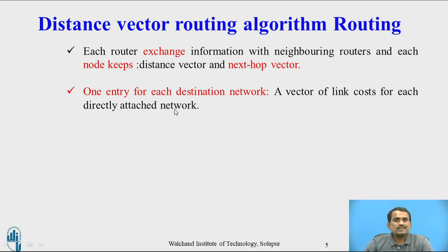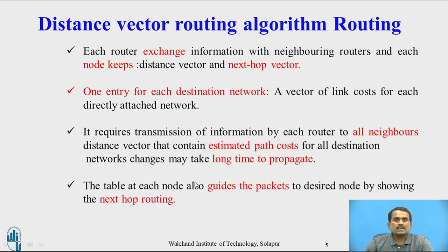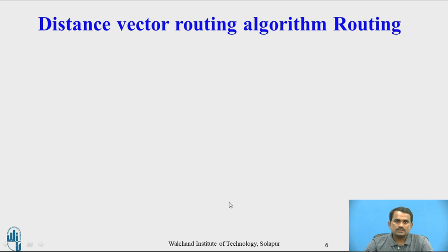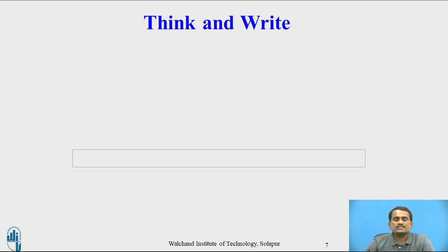There is one entry for each destination network, and a vector of link costs for each directly attached network. It requires transmission of information by each router to all neighbors — a distance vector containing estimated path costs for all destination networks. Exchanges may take a long time to propagate. The table at each node also guides the packet to the destination node by showing the next hop routing. Data available in each router includes a router table per destination, distances to calculate, outgoing line, and distances to all neighbors.